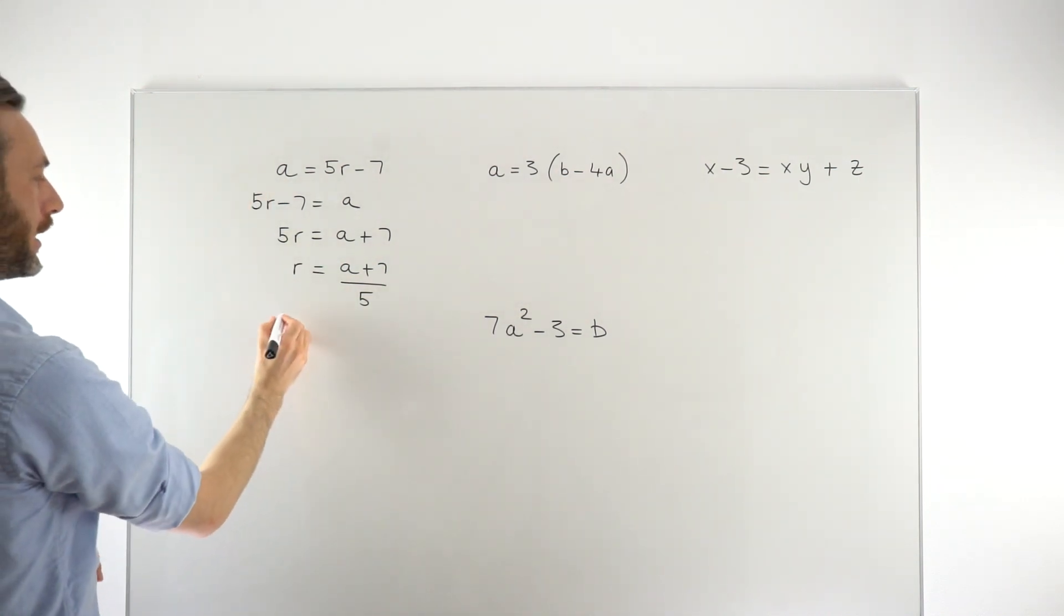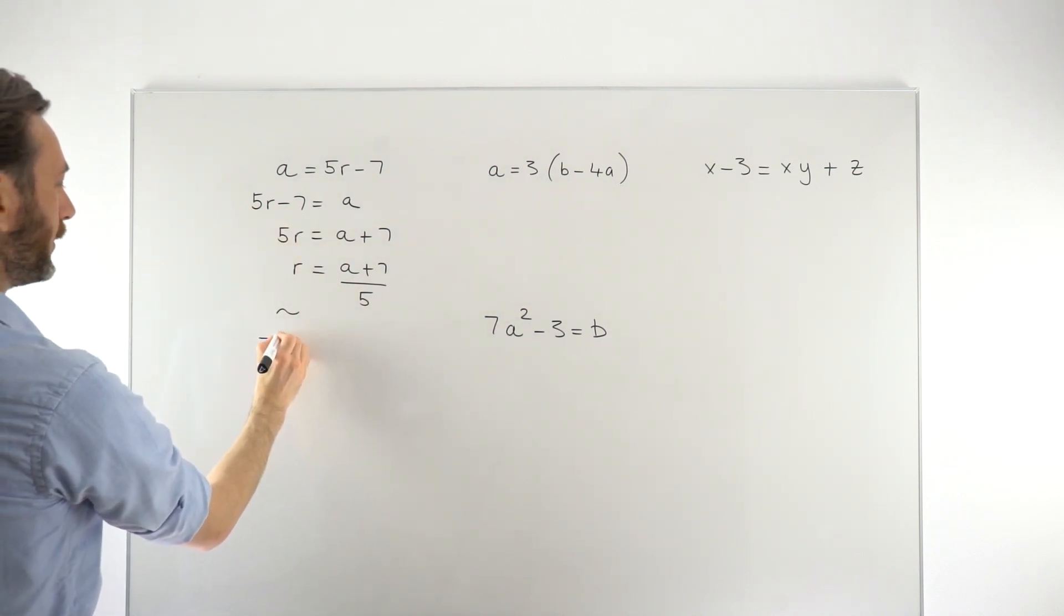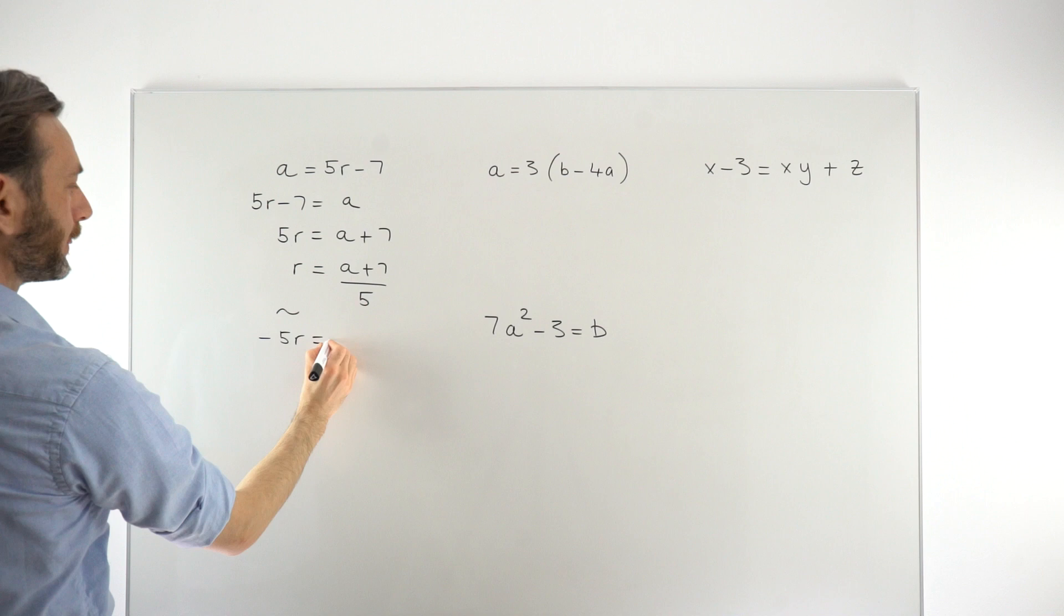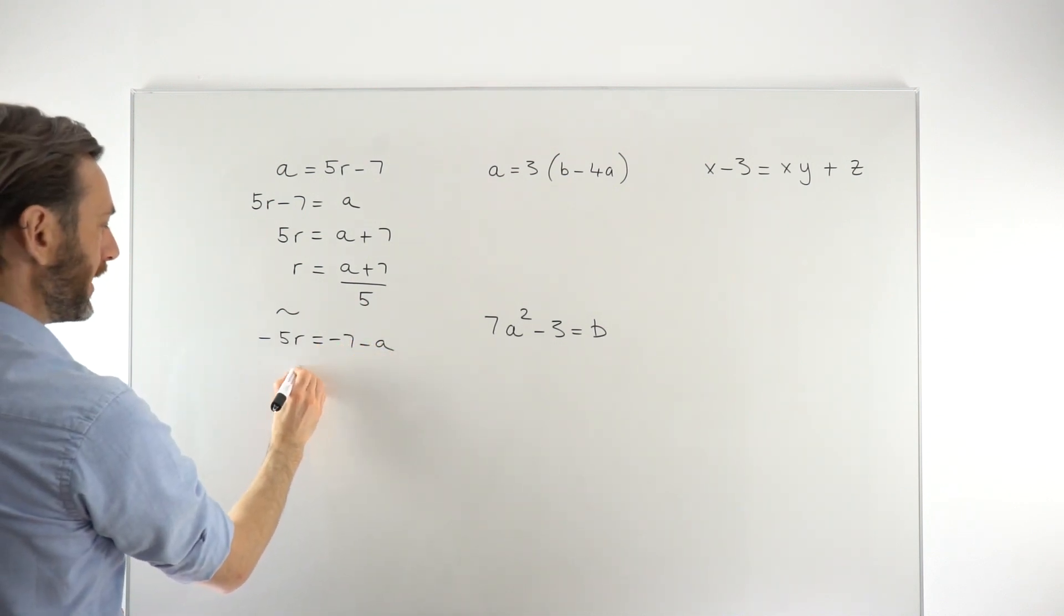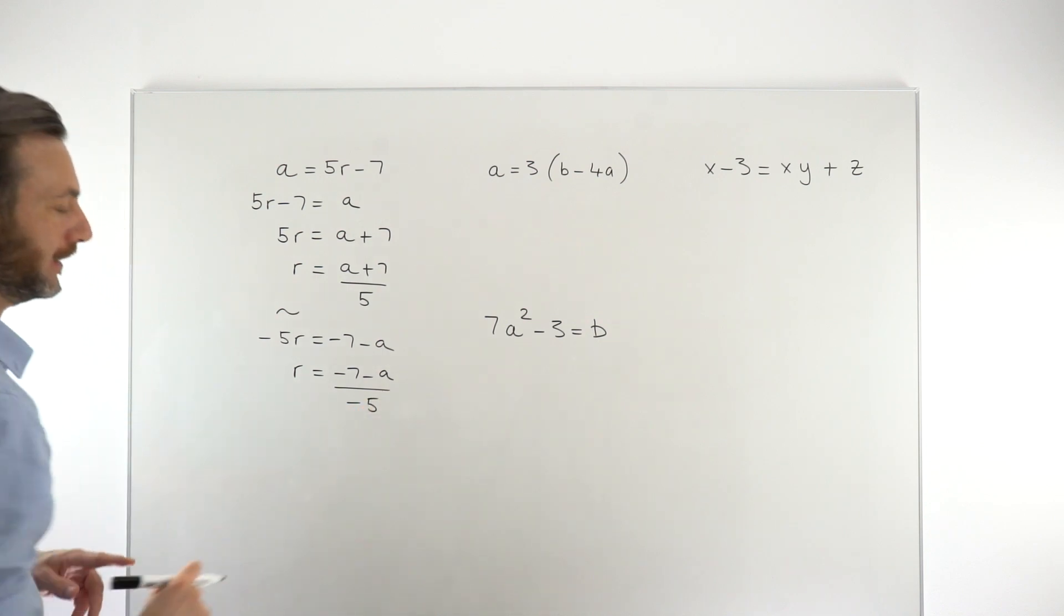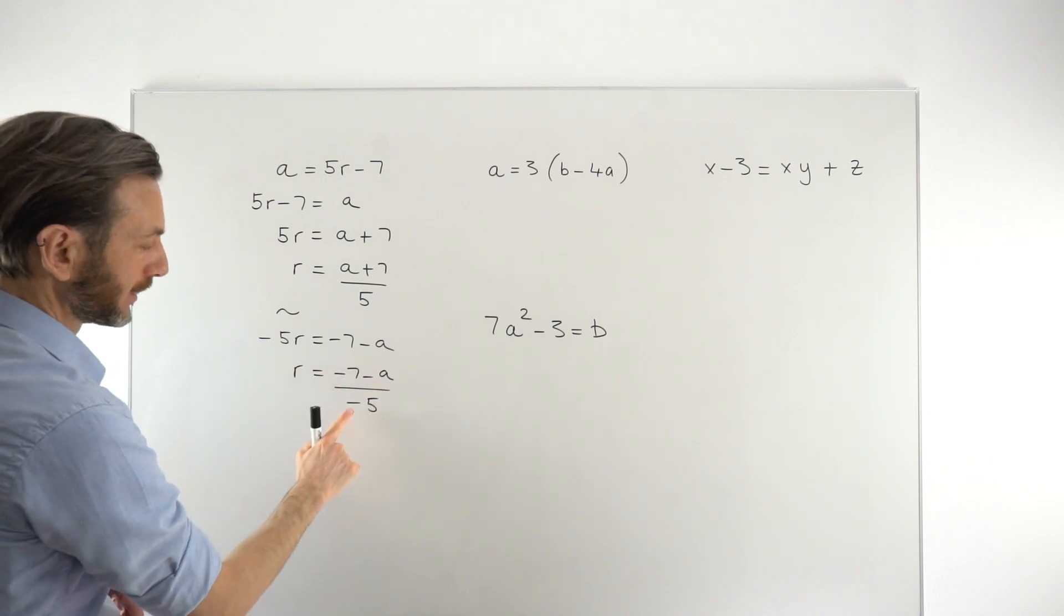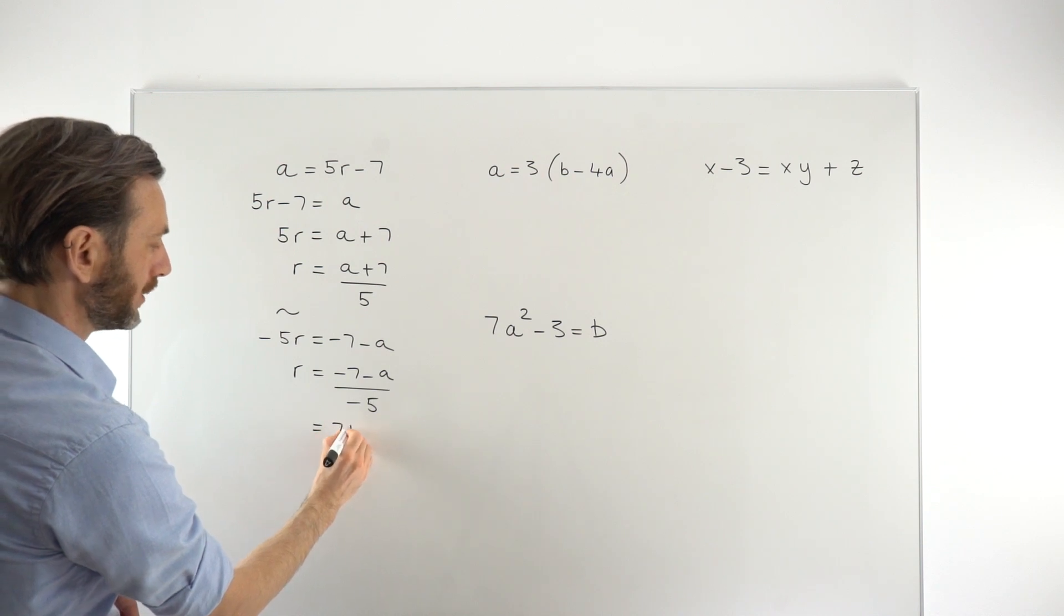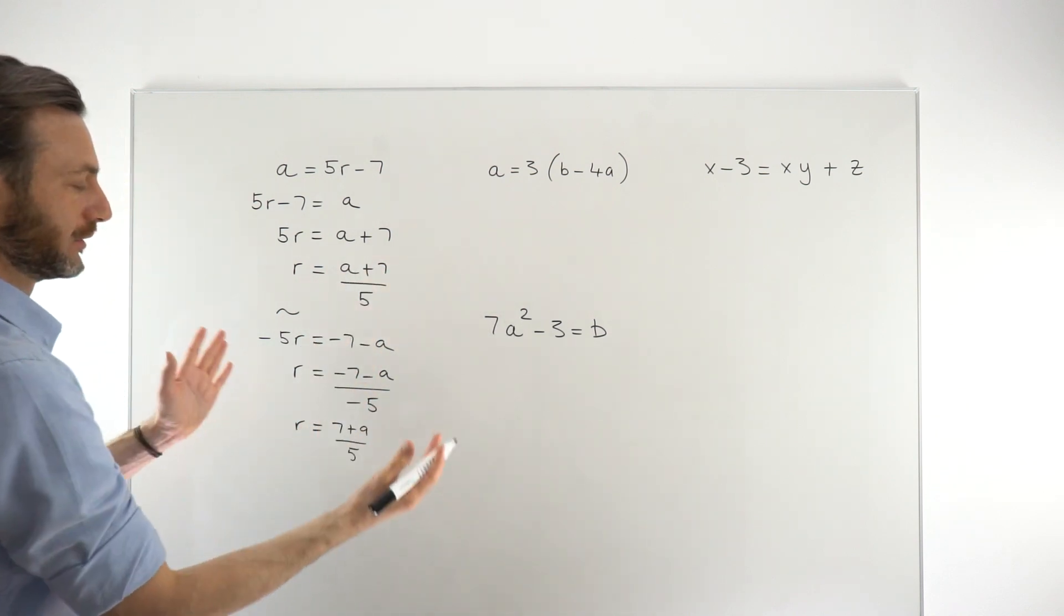If we did that one the other way, if instead of doing that flipping round thing, we just moved the terms, then we would get a minus 5R over here on the left because that's a positive so it becomes negative on the other side. We would get minus 7 minus A on the right. We would then need to divide by minus 5, which is okay. But you can see already all of these negatives—it's a little ugly, isn't it? You could still fix it because if you're dividing by a negative, that just makes the whole thing negative. So these negatives effectively cancel. So you would end up with 7 plus A over 5. And that is the same thing as that. 7 plus A and A plus 7 are the same thing.